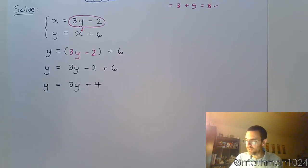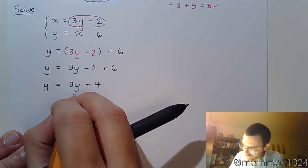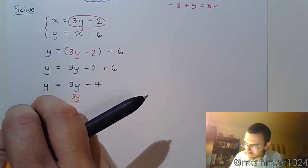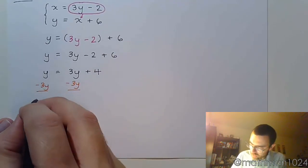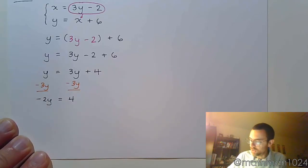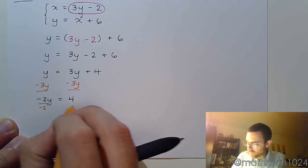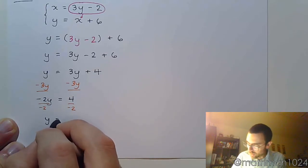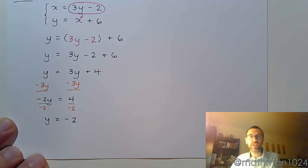Let's solve this. We're going to move the 3Y to the other side. So goodbye 3Y. So negative 2Y equals 4, which means that Y, I'm going to divide both sides by negative 2, Y equals negative 2.